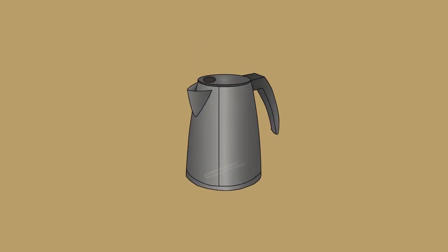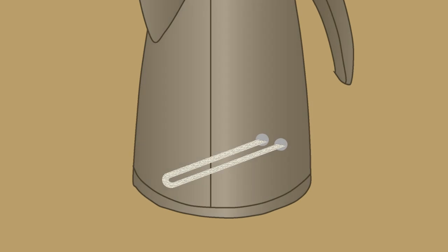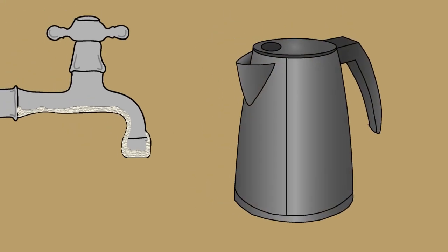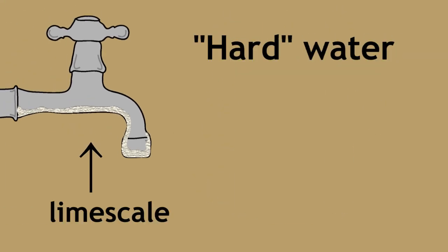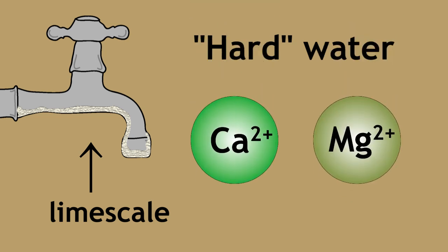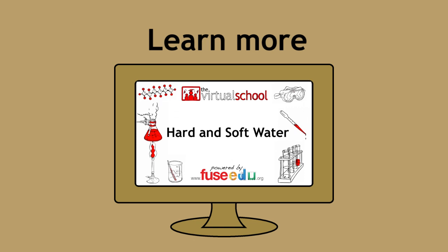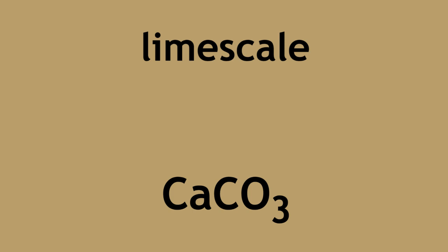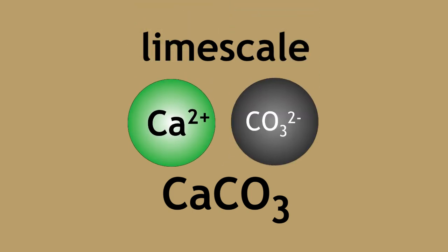Have a look inside your water kettle. You may see white deposits on the heating element or off-white particulates at the bottom. You may even find it around your water faucets. This is limescale caused by hard water, or water with many dissolved calcium and magnesium ions. Limescale is simply calcium carbonate formed when these dissolved calcium ions combine with carbonate ions.